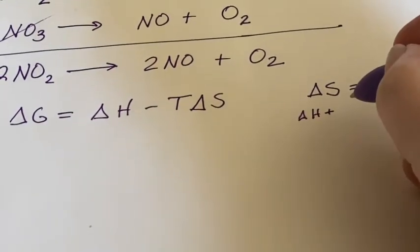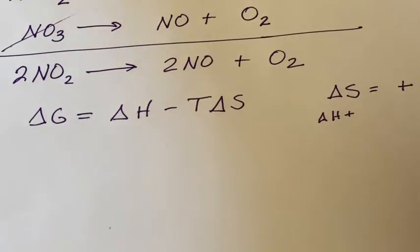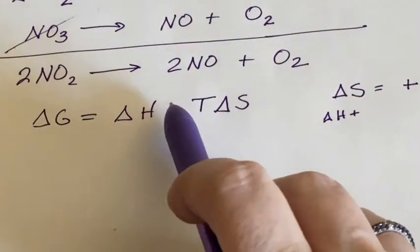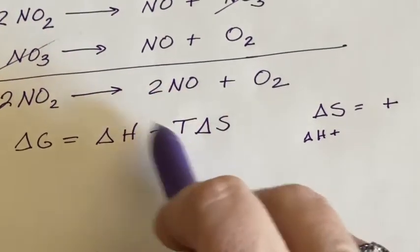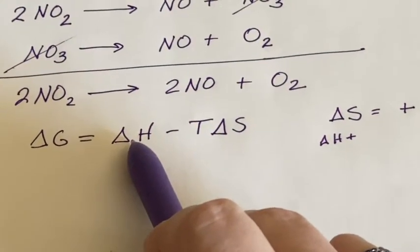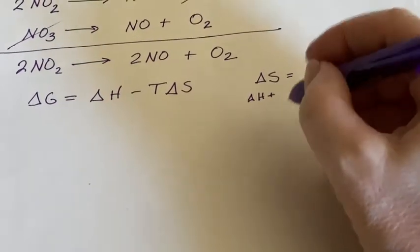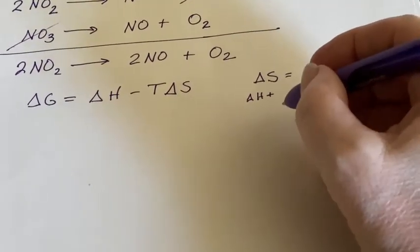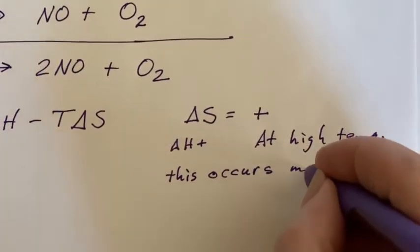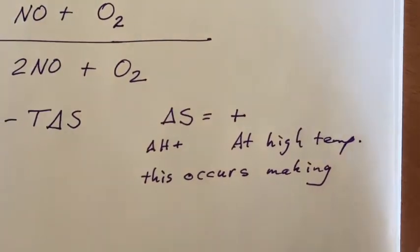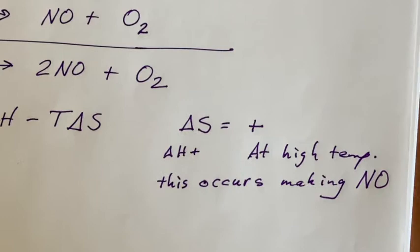And I know that I need delta G to be negative if I want it to be spontaneous. And when would that happen? Well, that would happen if the temperature was high enough so that this negative would overpower this being positive. At high temperatures, this is going to occur and will create nitrogen monoxide. That explains why we don't find it generally in the atmosphere because the temperature is not high enough to make it happen normally.